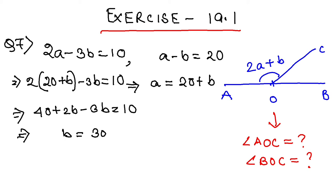If b is 30, I'll substitute back to find a. So a equals 20 plus 30, giving us a equals 50. These values are very important: a is 50 and b is 30.